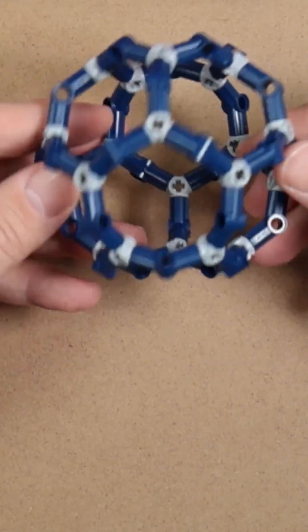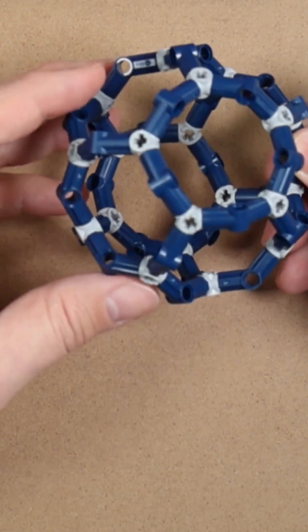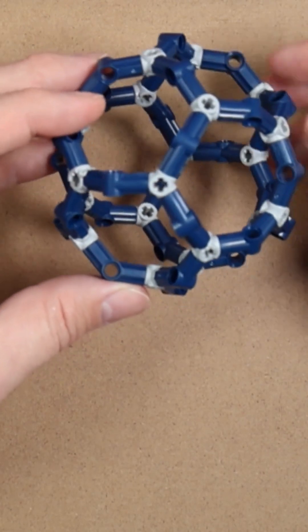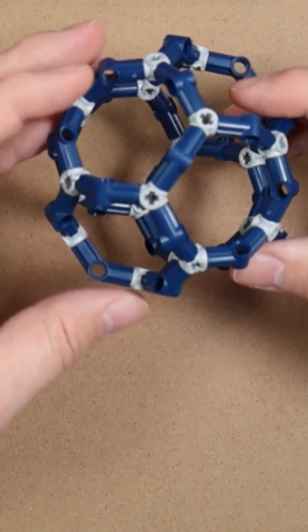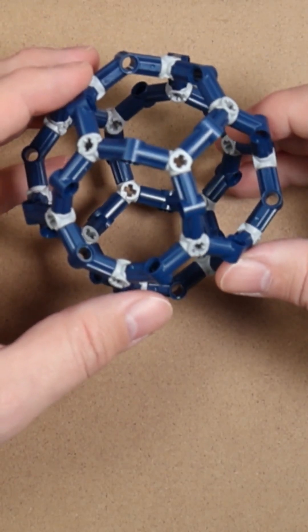So we looked at how we could make this dodecahedron, and it seems a little bit bumpy for a dodecahedron. You might be saying, is it really a dodecahedron? And yes it is, but actually it's more accurate to say we've made the dual of an icosahedron.